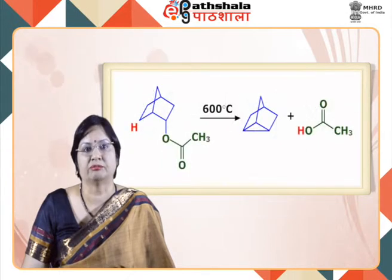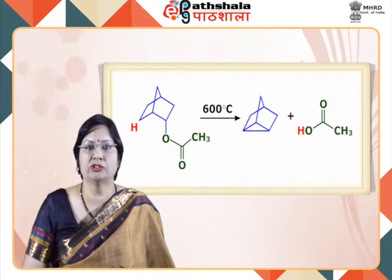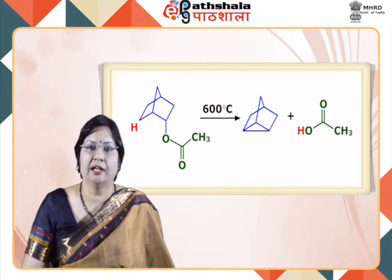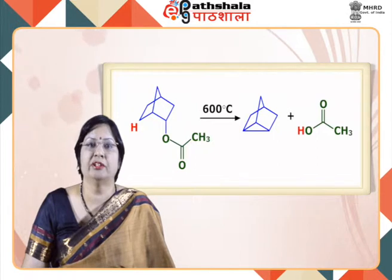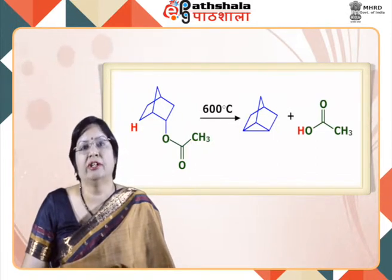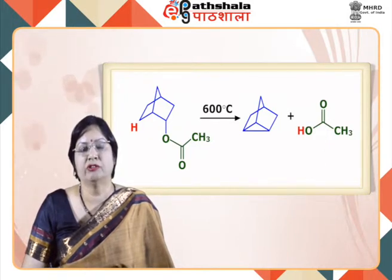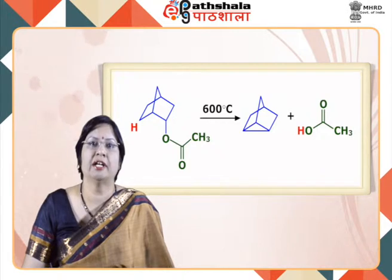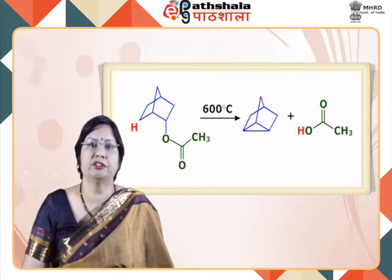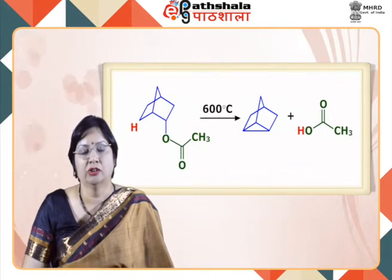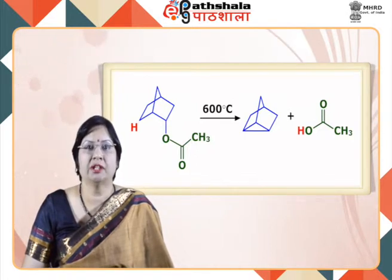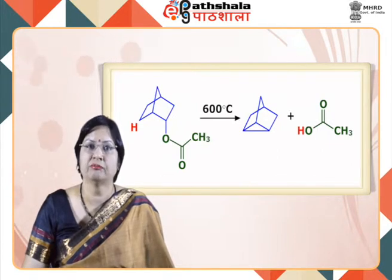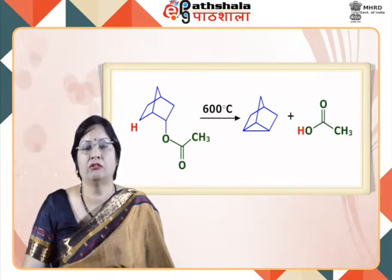Coming to beta elimination: beta elimination occurs when two groups are lost from adjacent carbon atoms. These constitute most of the pyrolytic eliminations with a typical EI mechanism. This is the most common — for example, dehydrohalogenation from alkyl halides giving alkene, or dehydration of alcohols giving alkene. In beta elimination the two groups lost are from adjacent carbons, whereas in alpha elimination the two groups lost are from the same carbon.